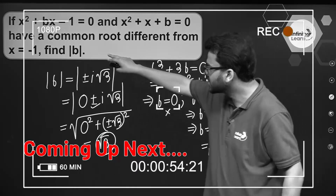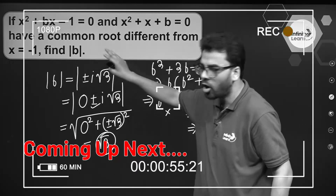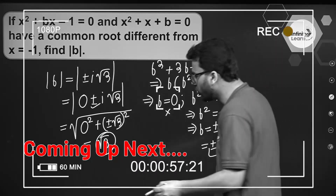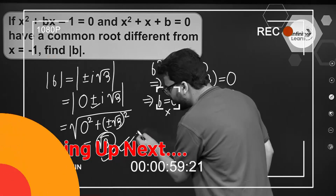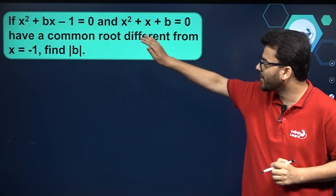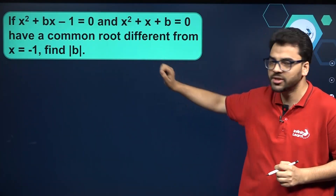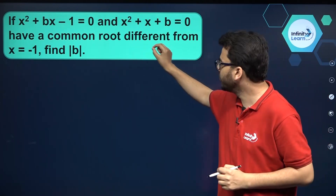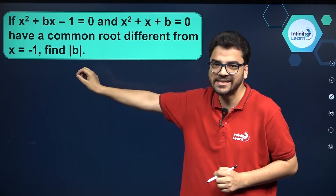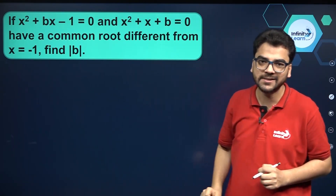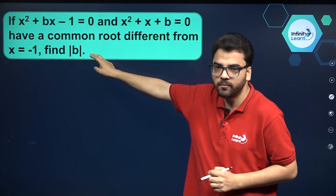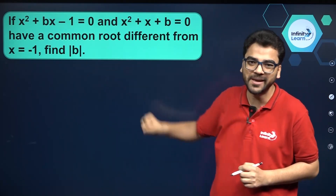So therefore the modulus of b, or the absolute value of b, is root 3. Let's now go through the full solution. We have two quadratic equations having a common root different from x = -1, and we have to find the value of modulus of b.